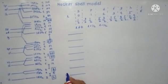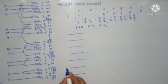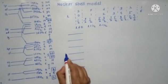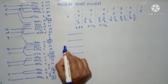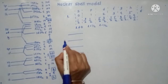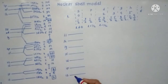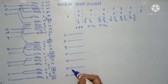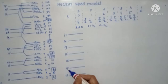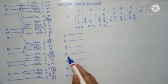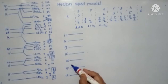In nuclear and particle physics, we have all the shells like 1s, 1p, 1d, 1f, 1g, 1h, and 1i. This is not the case like atomic and molecular physics — in atomic and molecular physics, you don't have 1p, 1d, 1f orbits. But here, all the energy levels are available.